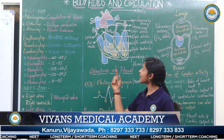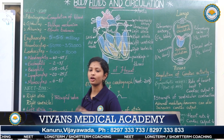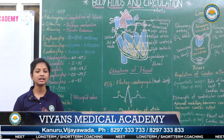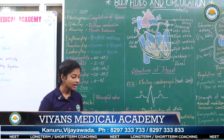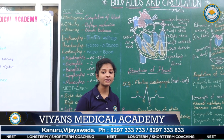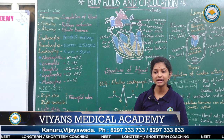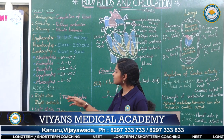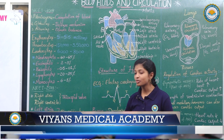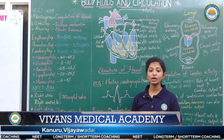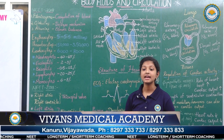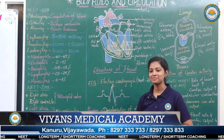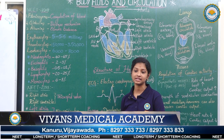In the heart there are two types of valves: cuspid valves and semilunar valves. Cuspid valves are divided into two types: Tricuspid and Bicuspid. These tricuspid, bicuspid, and semilunar valves are very important from an examination point of view. In 2018 NEET, a question was framed on these valves and their locations.